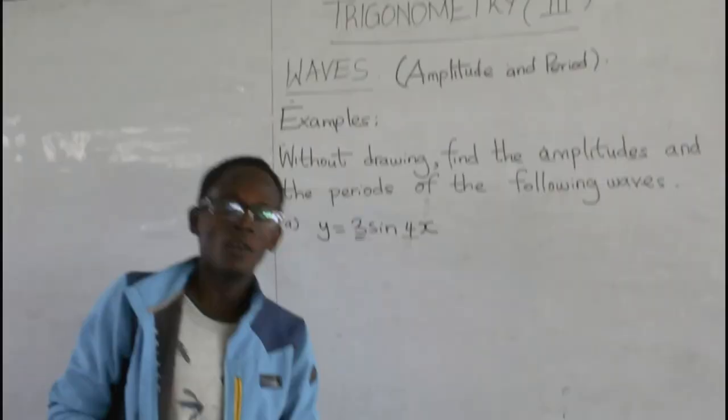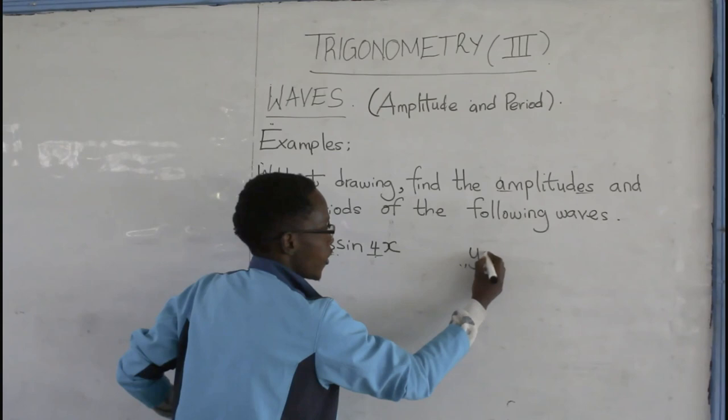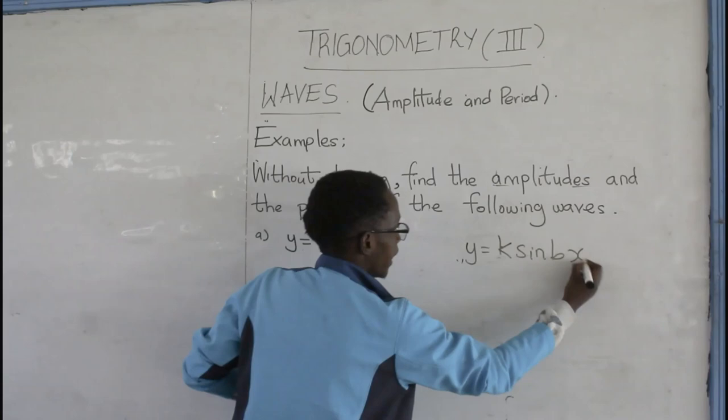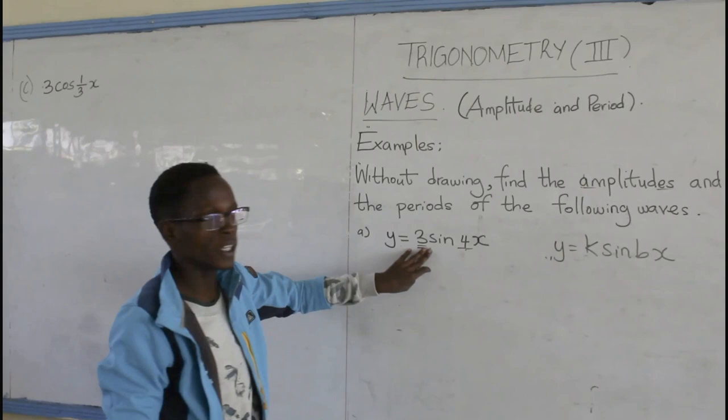Let's look at a couple of examples from the general equation. Y is equal to K sine B x. So, without drawing, find the amplitudes and the periods of the following waves. A. Y equals to 3 sine 4 x.